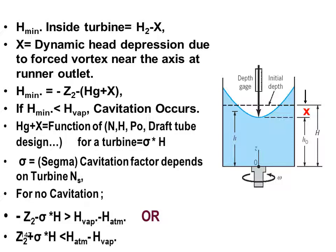If we know h_atmospheric, h_vapor, the turbine head H, and its cavitation factor sigma, we can use this equation to obtain a value for z2 that ensures a safe condition which prevents cavitation.